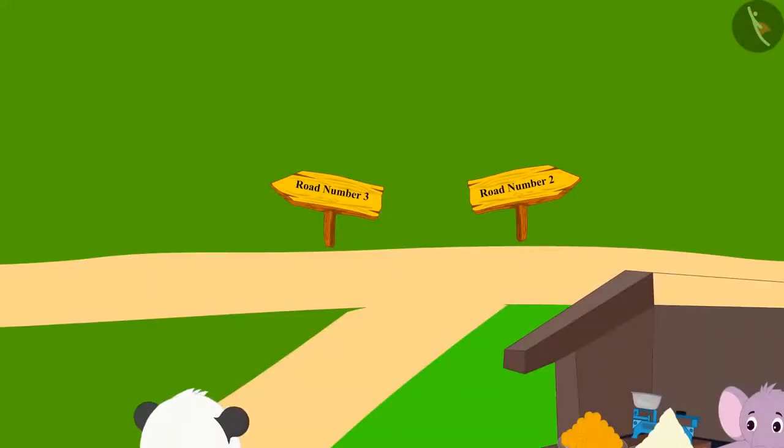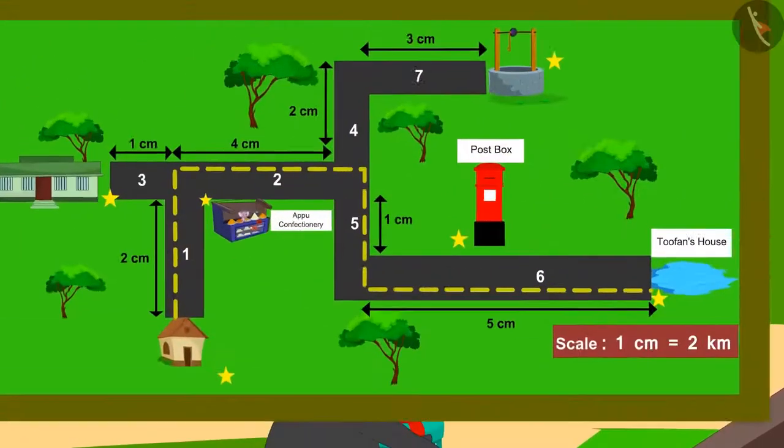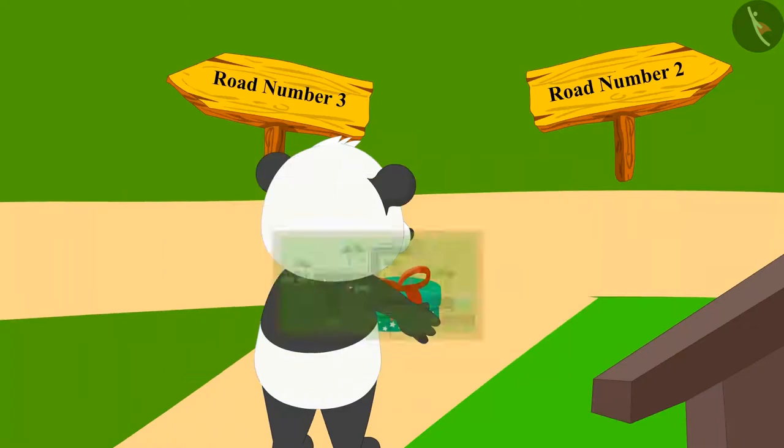Can you tell which road Golu will have to walk next? Look at the map and tell. Alright, Golu now has to go to road number 2.